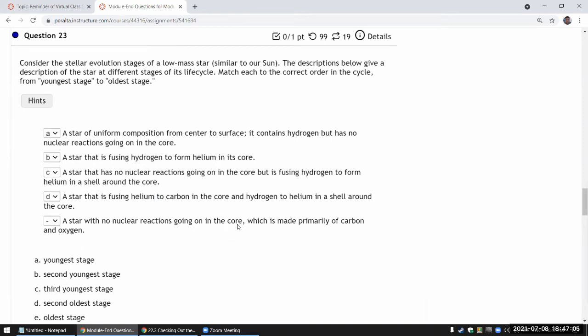No nuclear reactions in the core, which is made primarily of carbon and oxygen. And there may be reactions going on in the outer layers. But when all of that eventually stops, the carbon and oxygen will end up becoming the white dwarf. So that's the oldest stage.